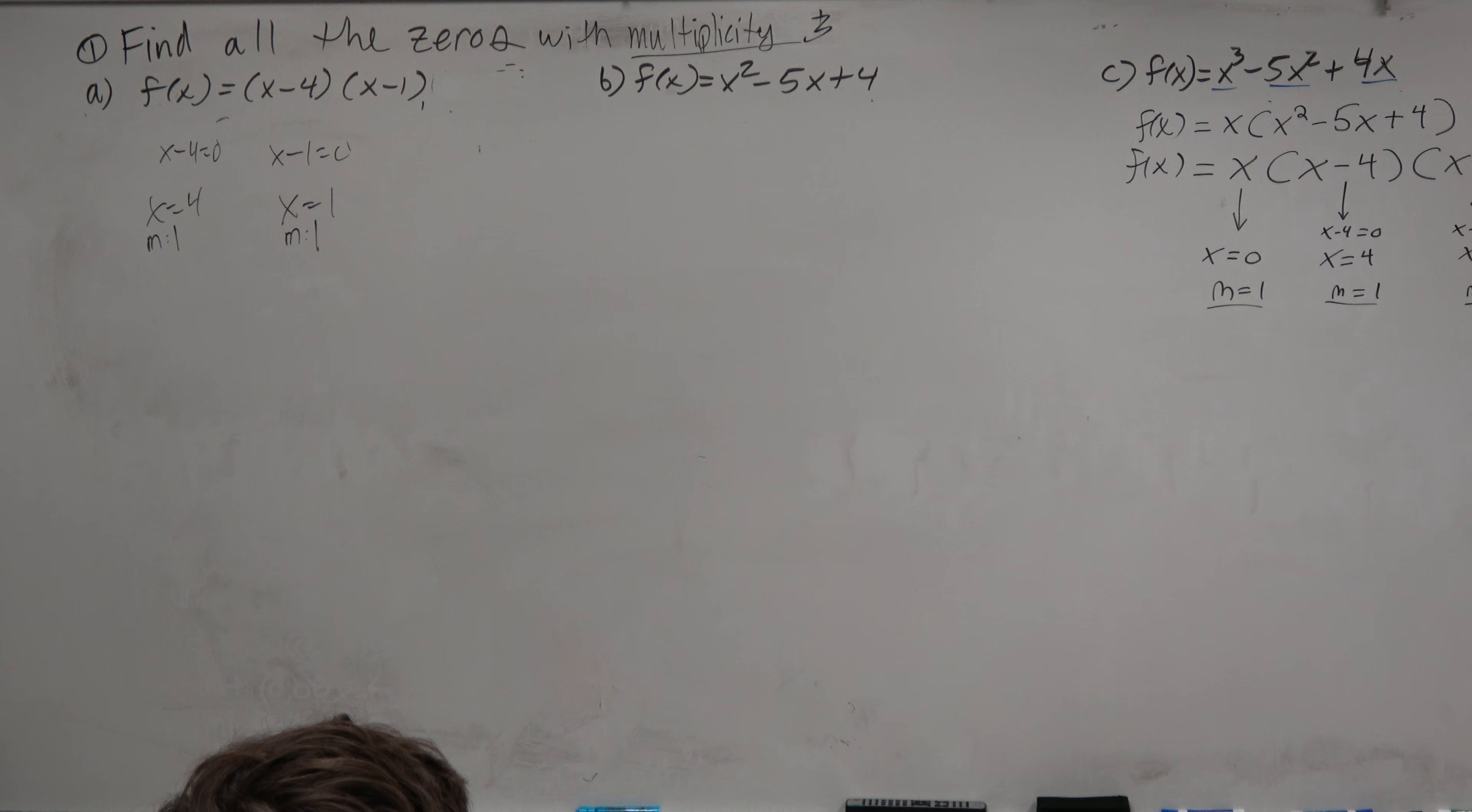So we say, what is the definition of zeros of a function? The definition for the zeros of a function is the values of x that make the equation true for f of x equal to 0.